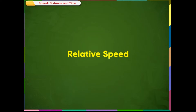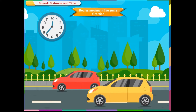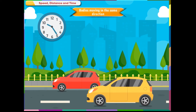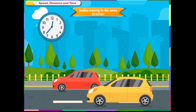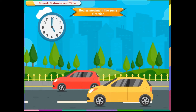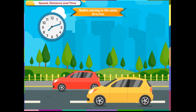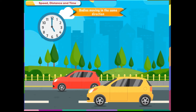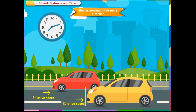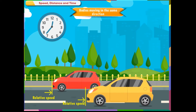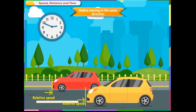Relative Speed. Normally, the speed of a moving body is calculated relative to a stationary object. When the speed of one moving body relates to another moving body, the effective speed of both movements is called the relative speed of these two moving bodies.